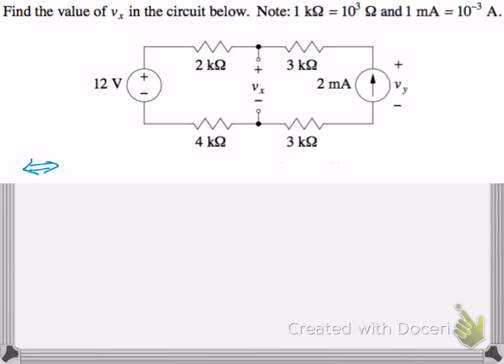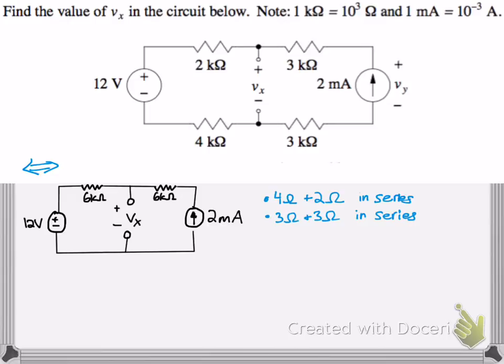We're trying to find Vx here. One thing you have to notice, it's kind of hard to see at first, but the 4 ohms and the 2 ohms on the left side of the circuit are actually in series and same with the 3 and 3 on the right. So we can rewrite that circuit. 4 and 2 is 6. 3 and 3 is 6. So we have our new circuit here.